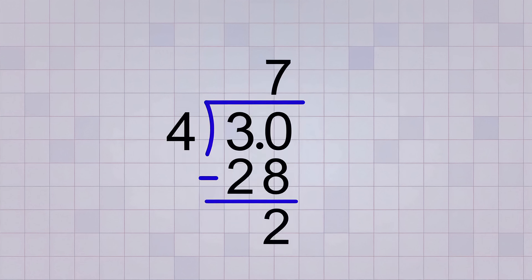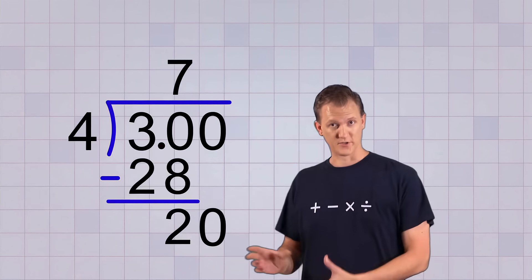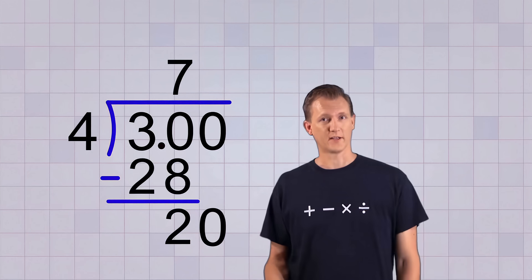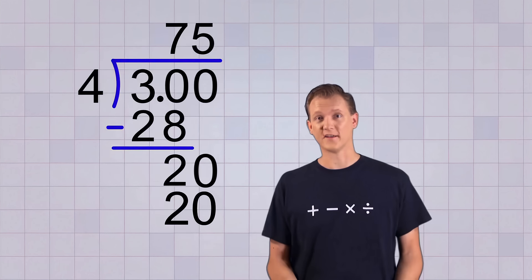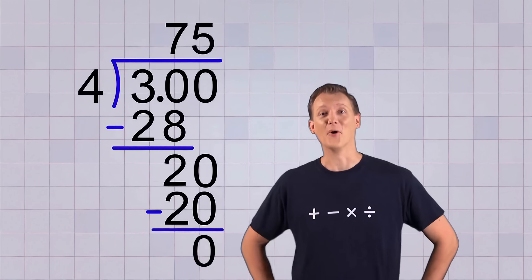But we don't want a remainder, so let's keep going. 4 is too big to divide into 2, so the only way we can get rid of the remainder is to use another 0 in the hundredths place, which makes the number we're dividing up kind of look like 300. Now we can bring down that extra 0 to make the remainder look like 20. And 4 will go into 20 5 times, because 5 times 4 equals 20. And that leaves no remainder. Oh yeah!